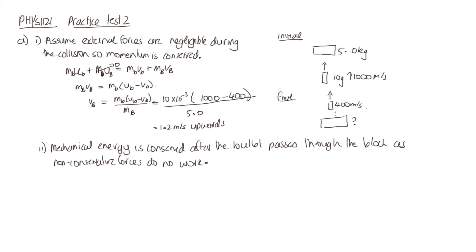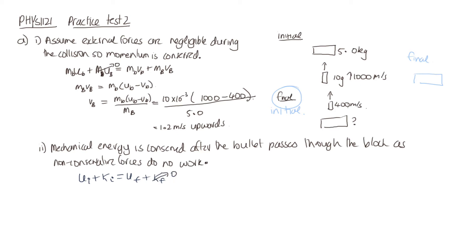We can assume that the initial kinetic energy — which is what we're referring to as final here, because we're talking about just after the bullet passed through the block — and then we want to find out how high the block is going to rise. This will be our new initial for this question. Initially this just has kinetic energy, so the initial potential plus initial kinetic equals the final potential plus final kinetic. At maximum height, it has zero speed, so no final kinetic energy. Initially we can say it's at height zero, so it has no potential energy.